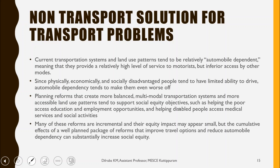Now moving to the last topic — non-transport solutions for transport problems. Current transportation systems and land use patterns tend to be relatively automobile-dependent, providing a high level of service to motorists but inferior access to other modes like public transit, bicycles, and walking. Since physically, economically, and socially disadvantaged people tend to have limited ability to drive, automobile dependency tends to make them even worse off. Planning reforms that create more balanced multimodal transportation systems and more accessible land use patterns support social equity objectives, such as helping the poor access education and employment, and helping disabled people access medical and social services.